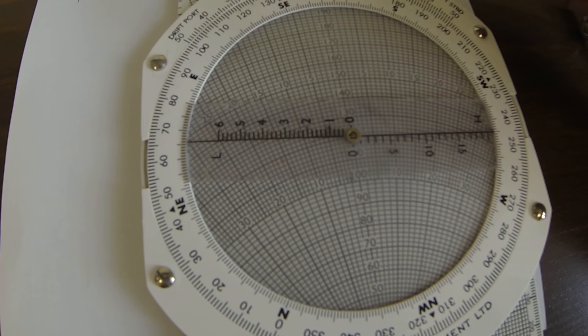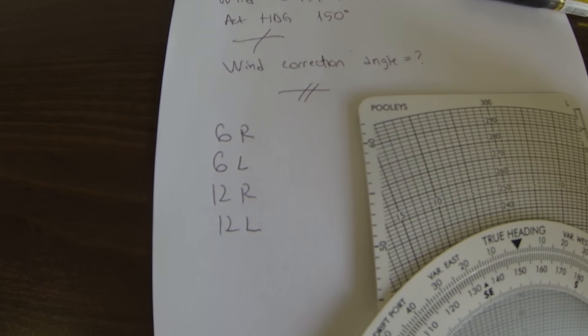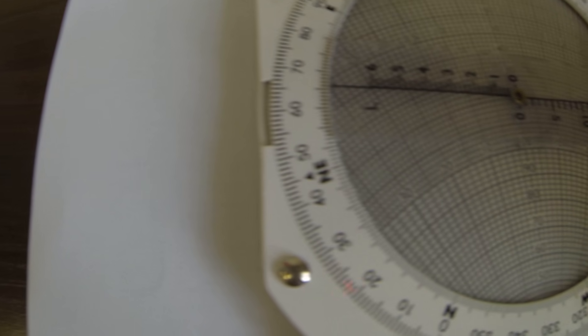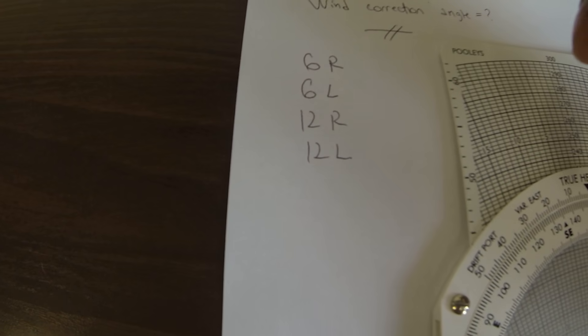All right, so what is the wind correction angle? 6 to the right, because the drift is to the left.